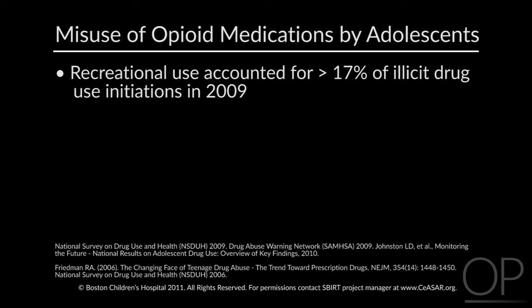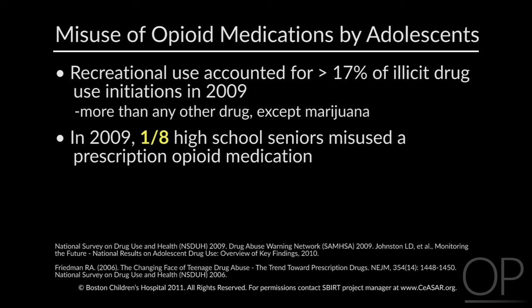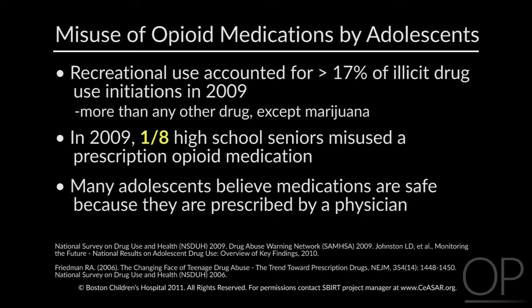Adolescents' recreational use of prescription painkillers accounted for more than 17% of all illicit drug use initiations in 2009. That means more adolescents started their drug use histories by using an opioid than any other drug other than marijuana. In 2009, one in eight, or about 13% of high school seniors, had misused a prescription opioid medication — meaning they used it either recreationally or for non-medical use sometime in their lifetime. Many adolescents misuse prescription medications because they believe they are safe since they are prescribed by a physician.